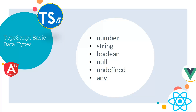Numbers in TypeScript work the same way as they do in JavaScript. Number type variables are declared with the data type 'number'. Textual variables are declared with the 'string' data type. TypeScript uses double quotes or single quotes to surround string data. Variables which return true or false use the boolean data type.